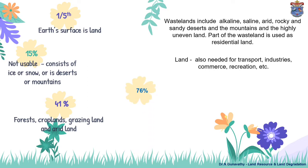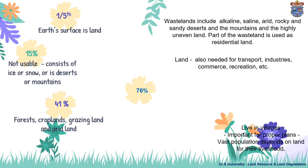Part of the waste land is also used as residential land. Land is also needed for transport, industries, commerce, and recreation. 46% of people live in villages, and therefore proper planning is very important because a vast population depends on land for their livelihood.